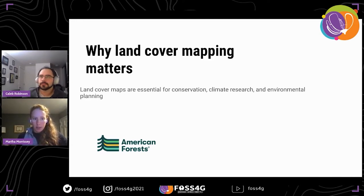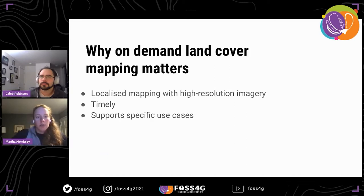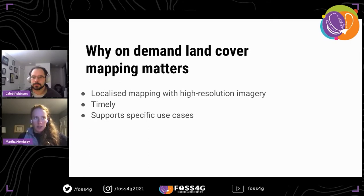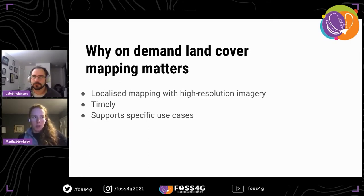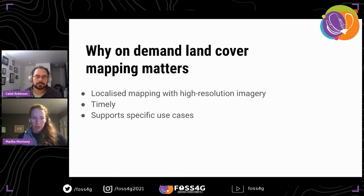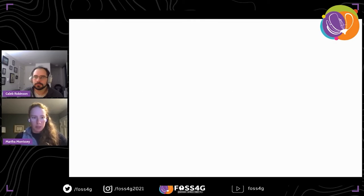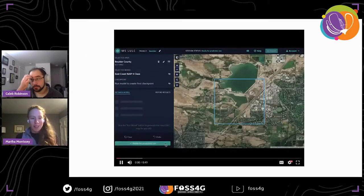This disparity in tree coverage has huge implications for residents' well-being and happiness, as well as the impacts of climate change and urban heat. The first step to understanding where trees are is to have a really accurate land use land cover map. It's also really important to have these maps on demand and as quickly as possible, because sometimes it can take years to create high-resolution land cover maps, especially if field work is involved.